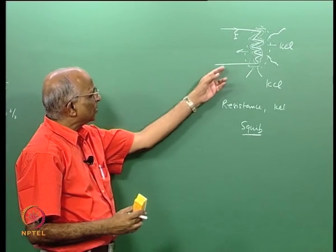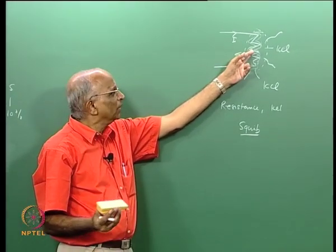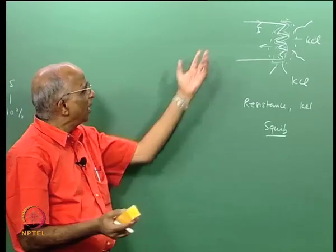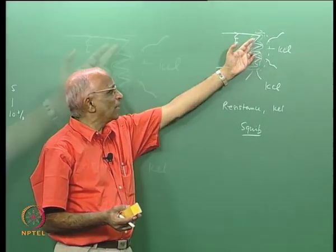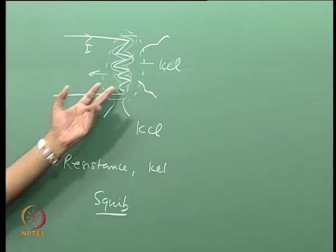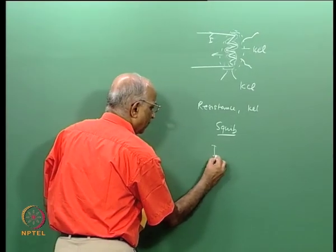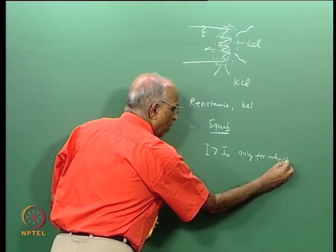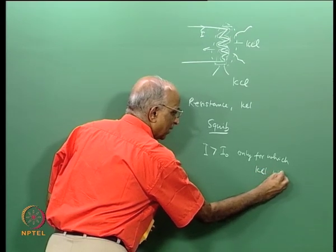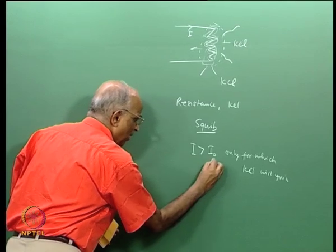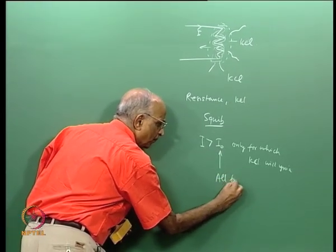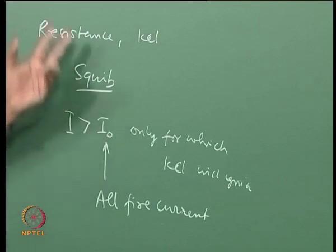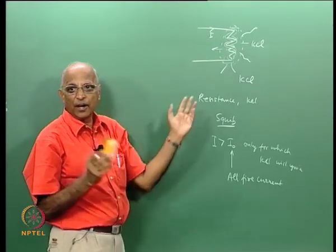Whenever I use electrical current for heating, it is possible that stray disturbances or electrostatic discharges could cause a small unintended current. Therefore, it is necessary that the current I must be greater than some threshold value for the composition like KCL or black powder to ignite. This threshold value of current is known as the all-fire current. If the current is less than the threshold value, even by stray electrostatic discharge, it will not catch fire and the motor is safe.